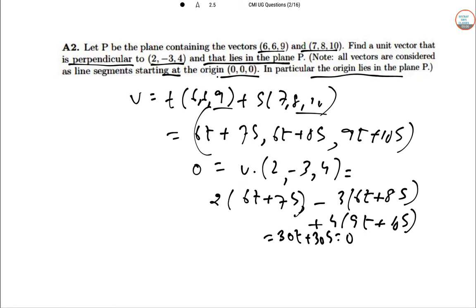So 30T plus 30S total and that is equal to 0. So taking if we take S equal to 1 and T equal to minus 1 we get the answer as 1, 2 and 1. And scaling it to a vector will give you this value. So here we will give you this value plus minus 1 by root 6, 2 by root 6 and also 1 by root 6. Hence the origin lies in the plane P. So the unit vector that is perpendicular to this is this one.